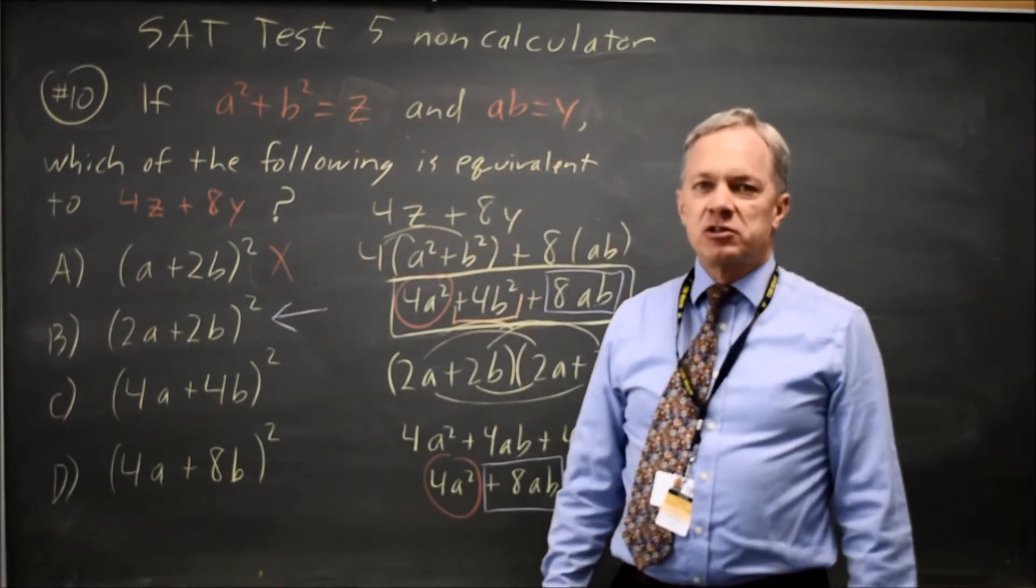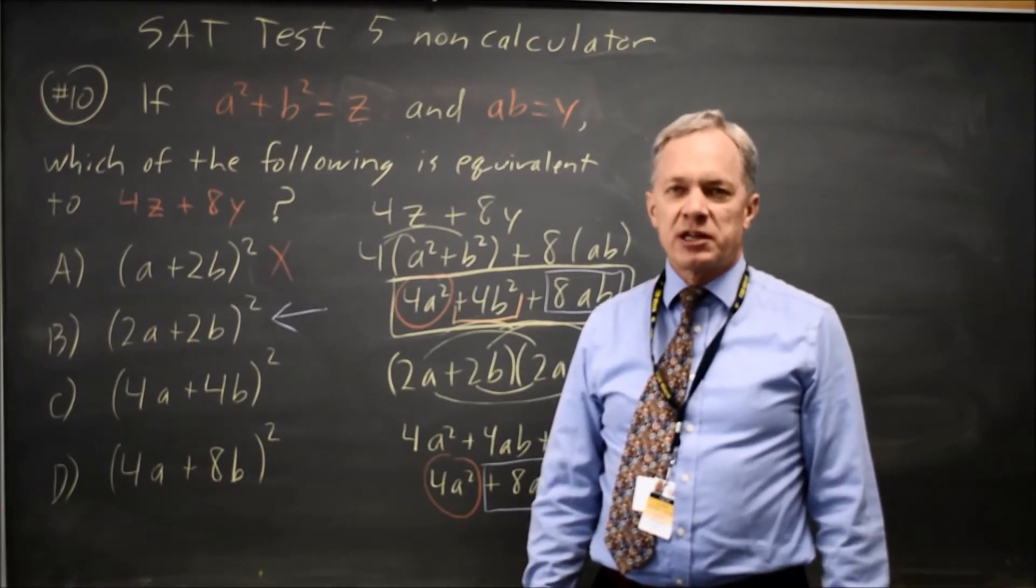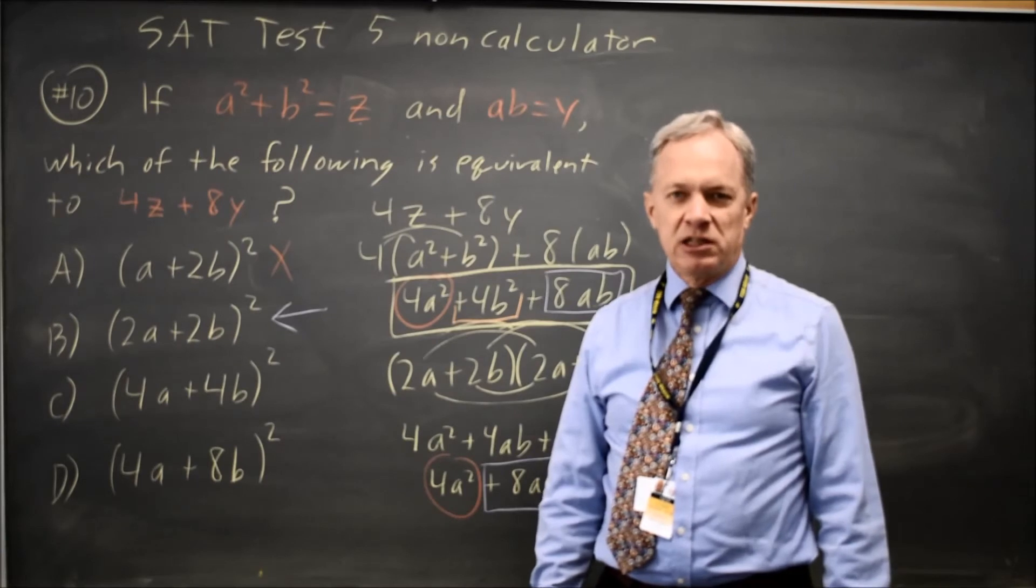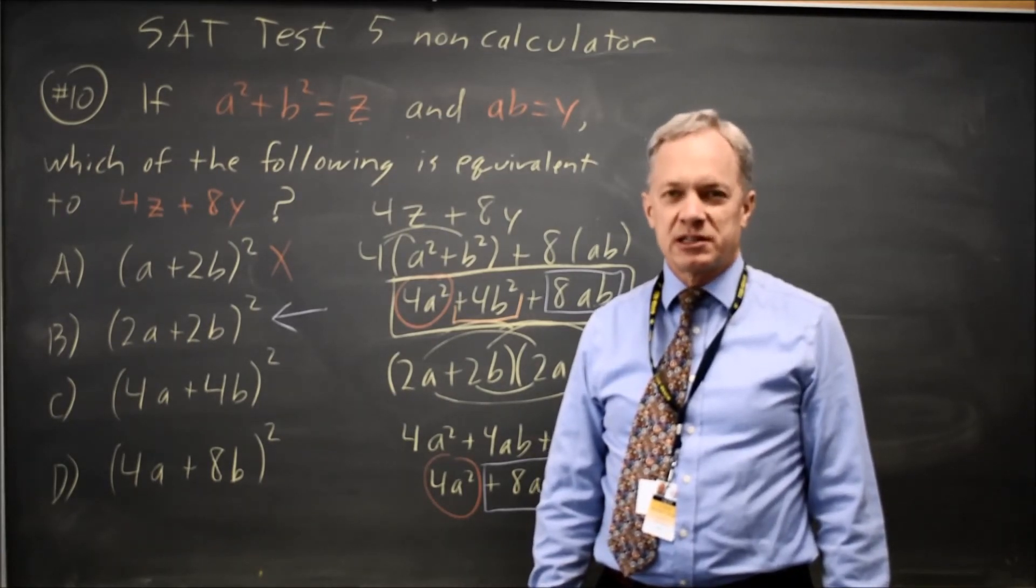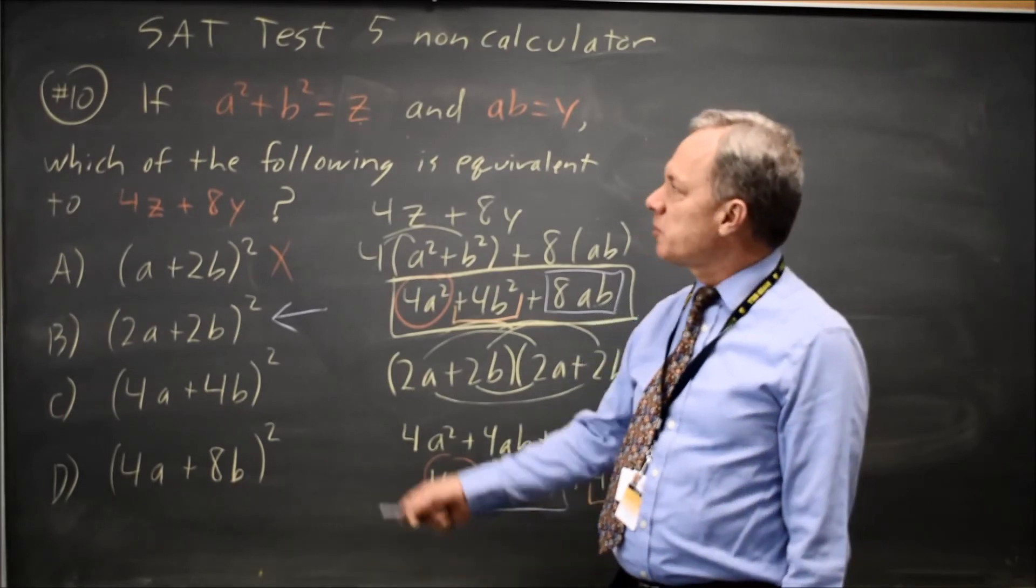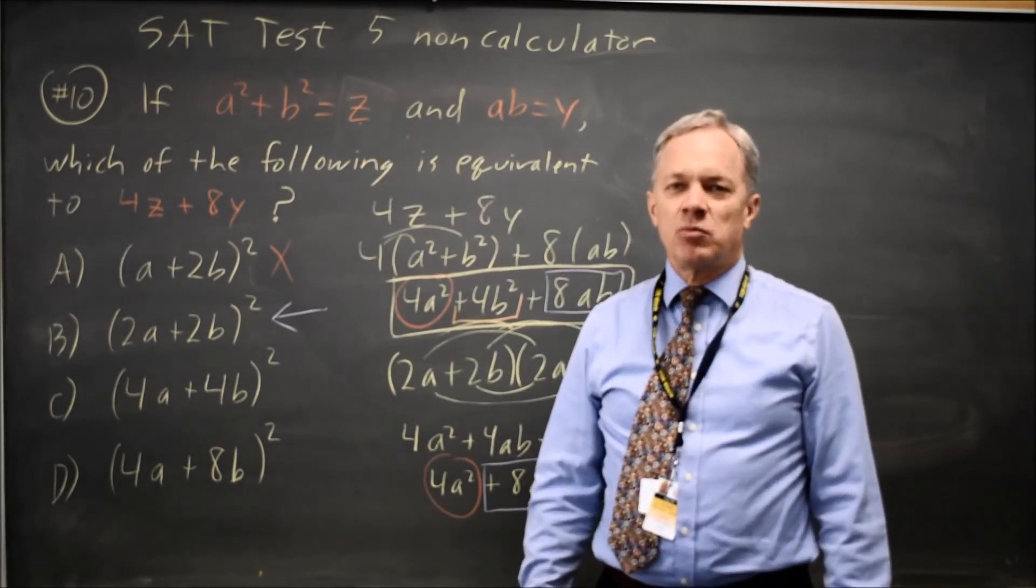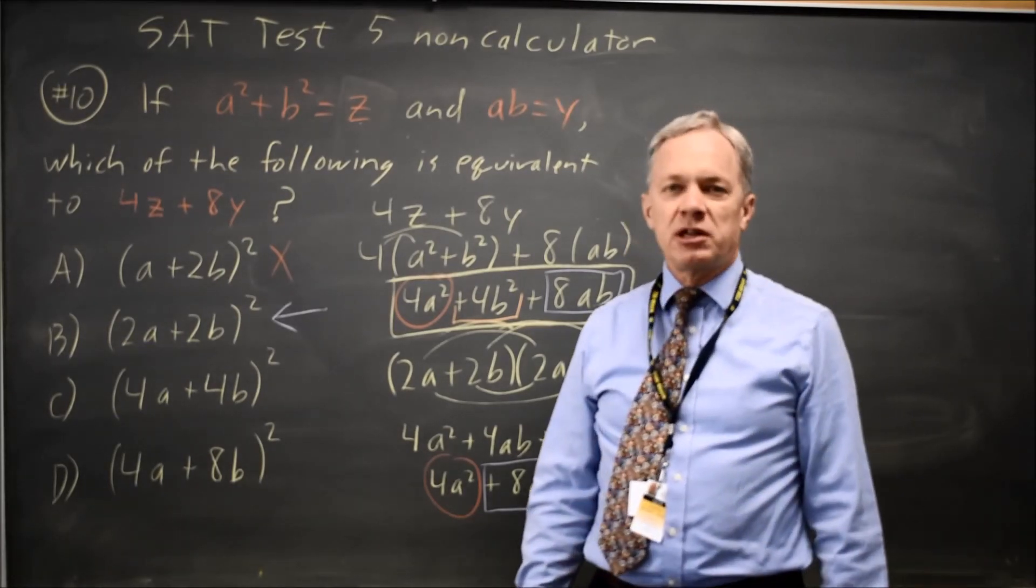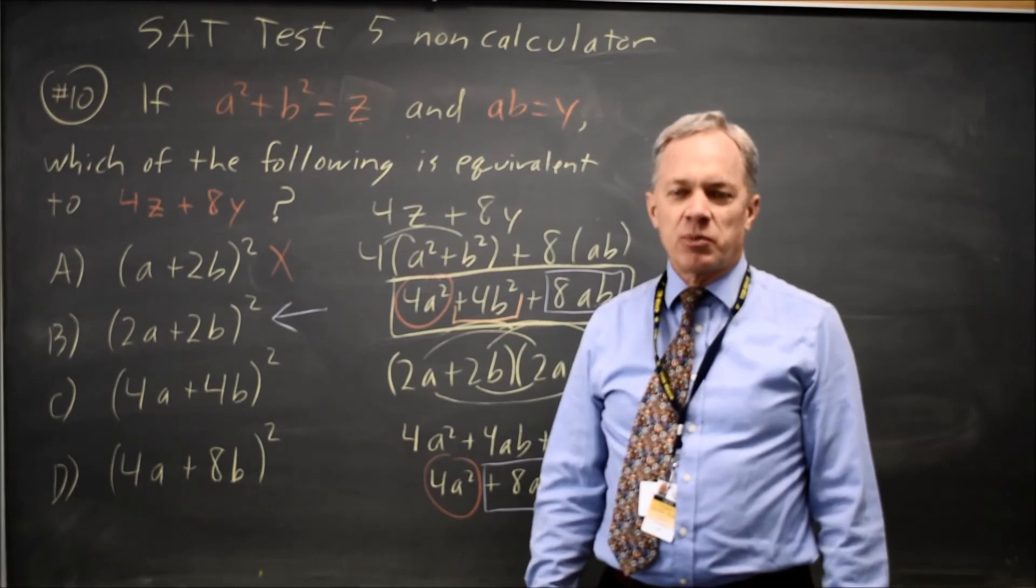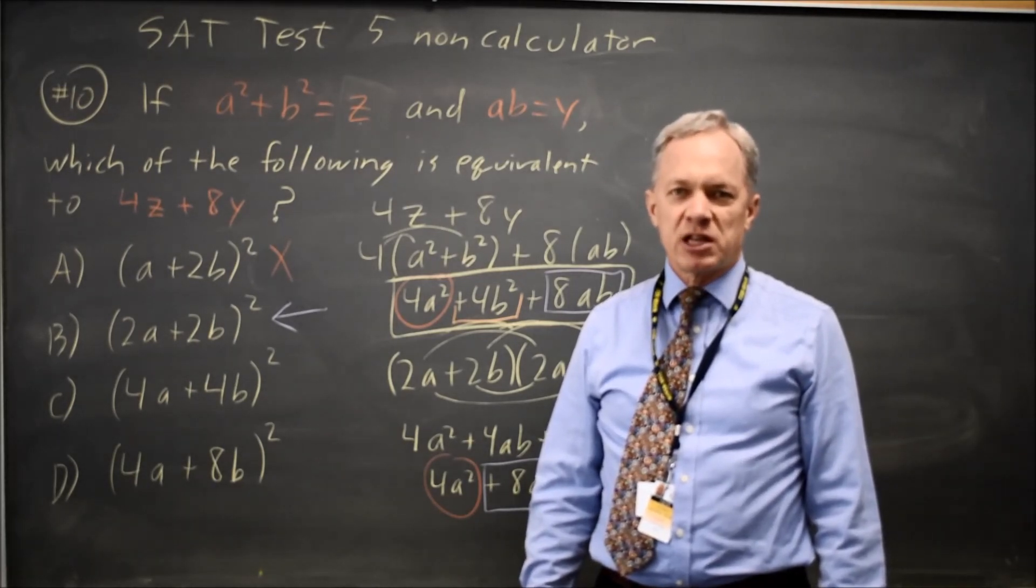If I wanted to take the time, I could use FOIL on choices c and d and verify that those do not match, but I already have the correct answer. And on the SAT under time pressure, at this point I would move on to the next question. College Board will typically ask you to rewrite an expression that involves more than one variable, or here you could treat a and b as constants, but either way, FOIL on where you get powers of different letters. Come back soon for my next math video. With math, there's always more.